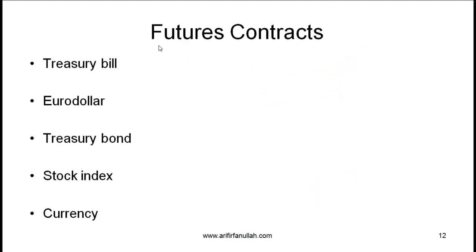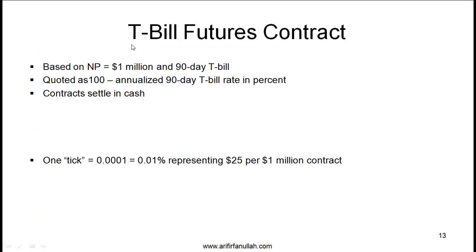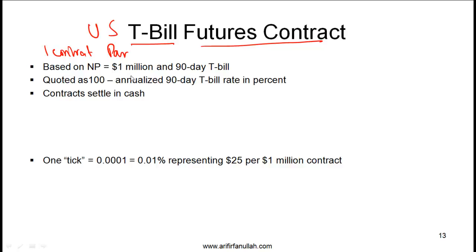Over the next few slides we'll talk about some specific futures contracts that the CFA Institute wants you to know: treasury bill contracts, eurodollar, treasury bond, stock index, and currency contracts. Let's start with the T-bill futures contract for the US T-bill. It is based on a notional principal of $1 million and the underlying is a 90-day T-bill. One contract means we have T-bills with a par value of $1 million.